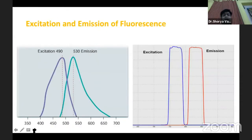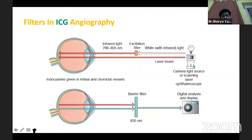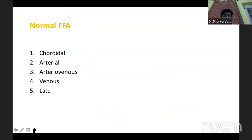The excitation and emission curves for fluorescein are 490 nm excitation and 530 nm emission, and for ICG they are 790 to 805 nm excitation and 835 nm emission. These correspond to the filters that we use in the procedure for both ICG and FFA.